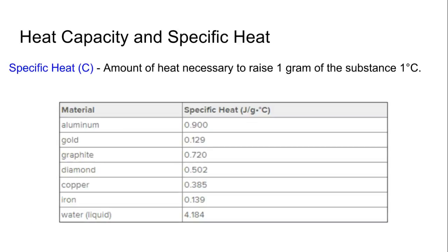Now the higher the number or the higher the specific heat, the harder it is to change its temperature, the more heat we need to change its temperature. So if you look at water at 4.184, that's much higher than all the others. Gold has the lowest specific heat, which means it is the easiest to change its temperature. With just a little bit of heat, it'll change its temperature very quickly.